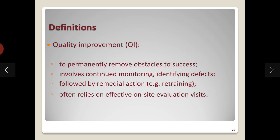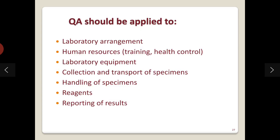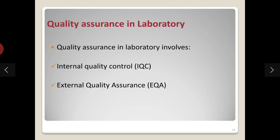Quality improvement aims to permanently remove obstacles to success. It involves continued monitoring, identifying defects, and following remedial actions such as retraining technicians or staff members. It also relies on effective on-site evaluation visits. Quality assurance is applied in laboratory arrangement, human resources, training of staff, health control, laboratory equipment, collection and transport of specimens, specimen handling, reagents, and reporting of results. It involves both internal and external quality control.